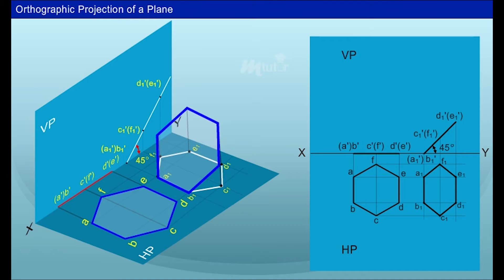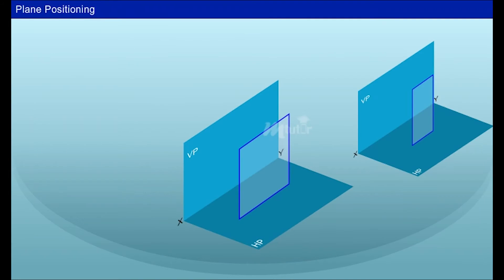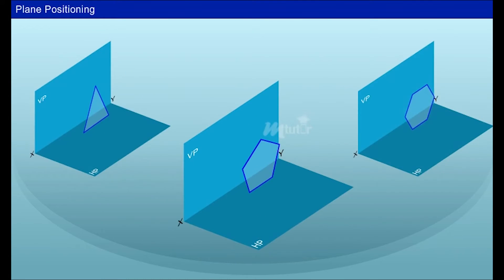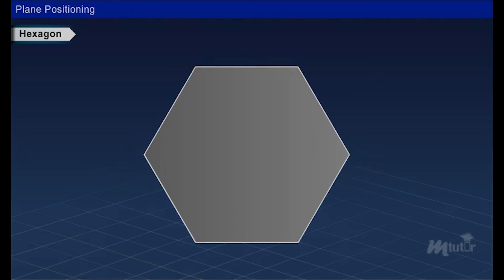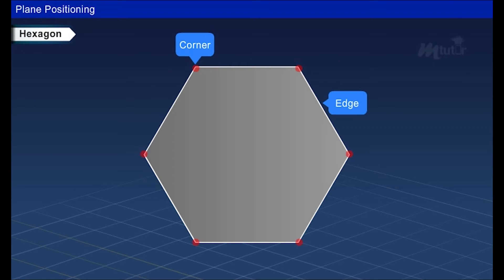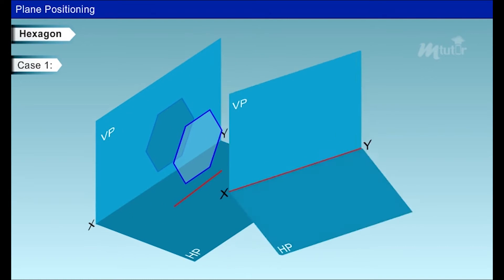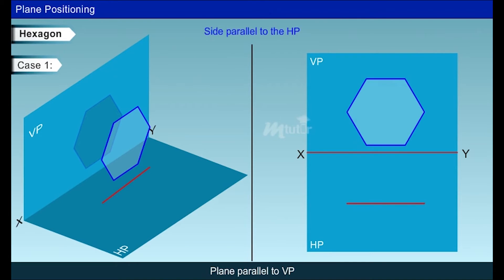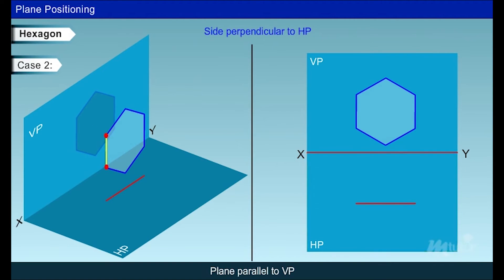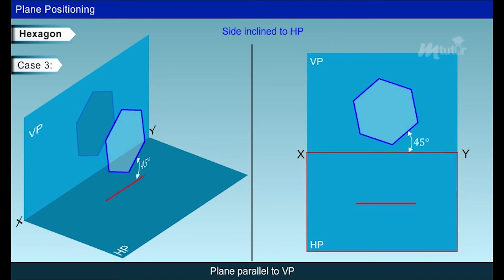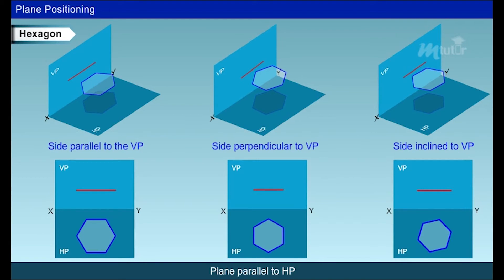Similarly, the orthographic projection can be drawn from different planes. In the projection of planes, the first step involves positioning the lamina in the principal planes. A hexagon has six corners and six edges. If the problem states a hexagonal plane parallel to VP, the hexagon can be drawn as shown, with the edge parallel to the horizontal plane. When the side is perpendicular to HP, or inclined at 45 degrees to the HP, it can be drawn as shown. When the hexagon is parallel to HP, the true shape is obtained from the top view.